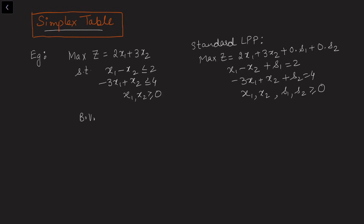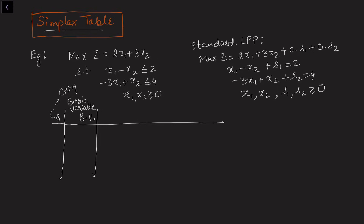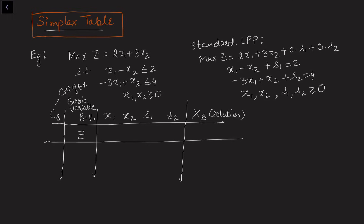The simplex table follows the approach of basic solutions. We write the basic variables in the first column, and to the left of them we write cb, the cost of the basic variable. On the right side we write all decision variables involved in the LPP — x1, x2, s1, s2 — then the solutions of the basic variables currently in the basis. We also write the z row: the objective function variable and its value. At the initial BFS, z is always 0.